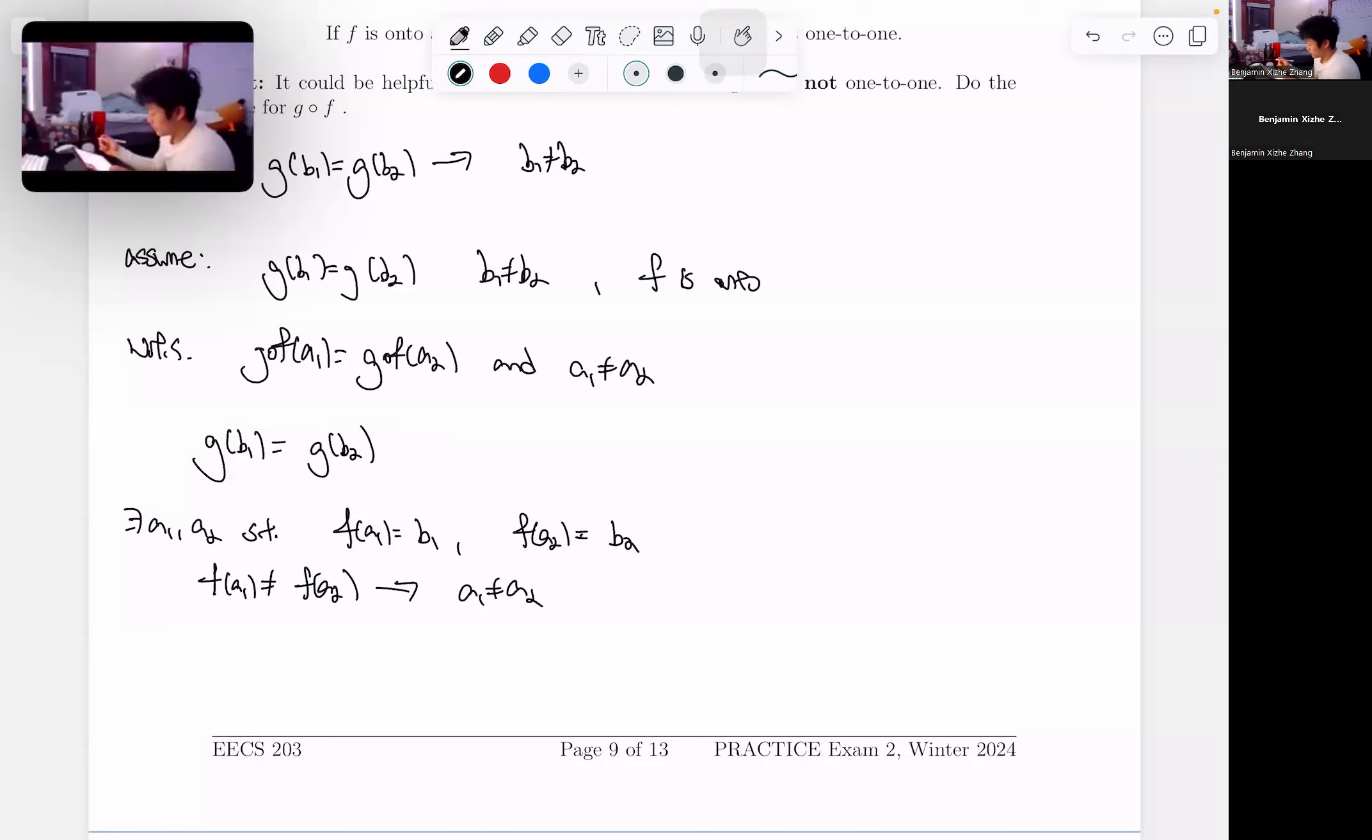This is based on the definition of the function. So if these two elements are mapped to different elements in the codomain, then they cannot have been the same element in the input domain. This is just based on the definition of f being a function. So we know a1 does not equal a2. So now what do we have?